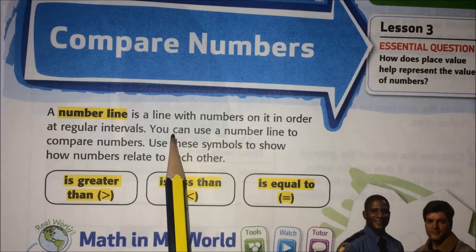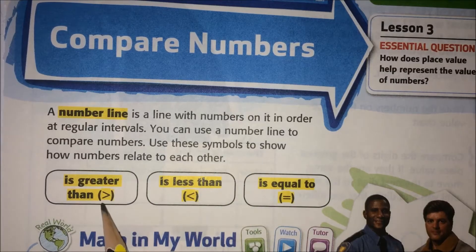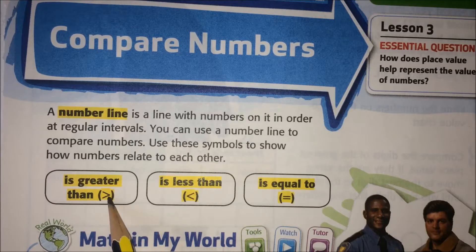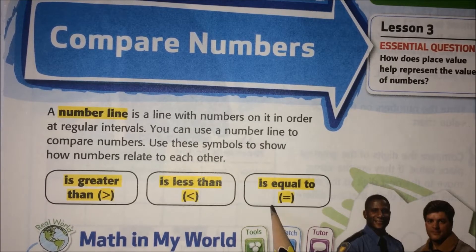You can use a number line to compare numbers. Use these symbols to show how numbers relate to each other. I think you've probably seen these before. This one means greater than. This one means less than. And this one means equals.